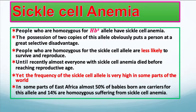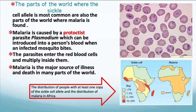People who are homozygous for the HbS allele have sickle cell anemia. The possession of two copies of this allele obviously puts a person at a great selective disadvantage — they are less likely to survive and reproduce. Until recently, almost everyone with sickle cell anemia died before reaching reproductive age, yet the frequency of the sickle cell allele is still high in some parts of the world. In some parts of East Africa, almost 50% of babies are born as carriers for this allele, and 14% are homozygous suffering from sickle cell anemia. The parts of the world where the sickle cell allele is most common are also the parts where malaria is found.